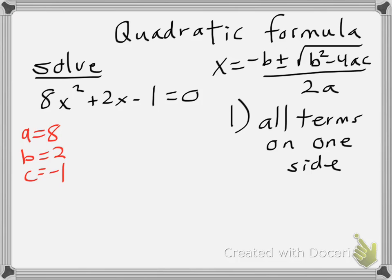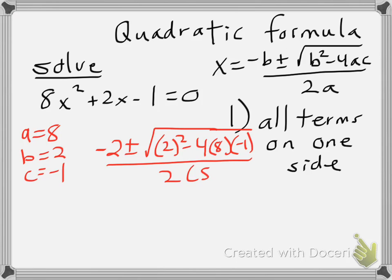So putting it into my formula, since b is 2, opposite of b is negative 2, plus or minus the square root of b squared minus 4 times a times c, all over 2 times a.